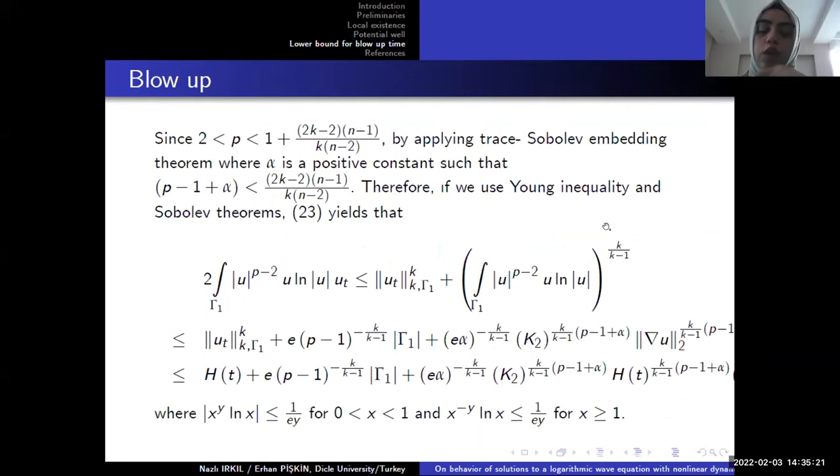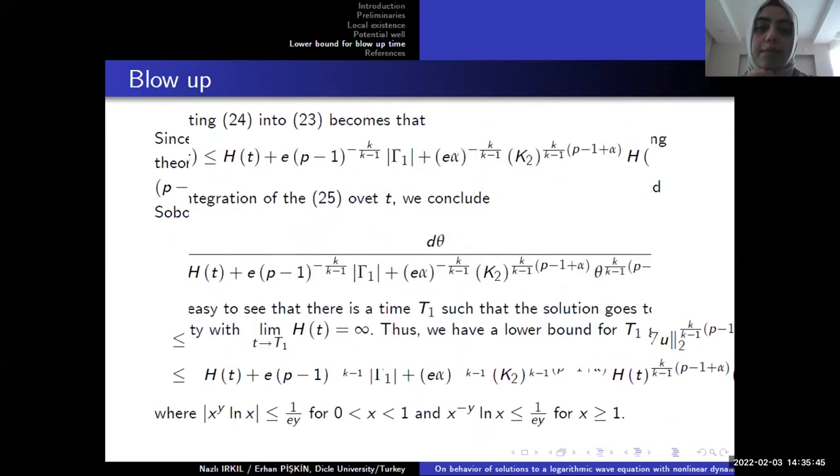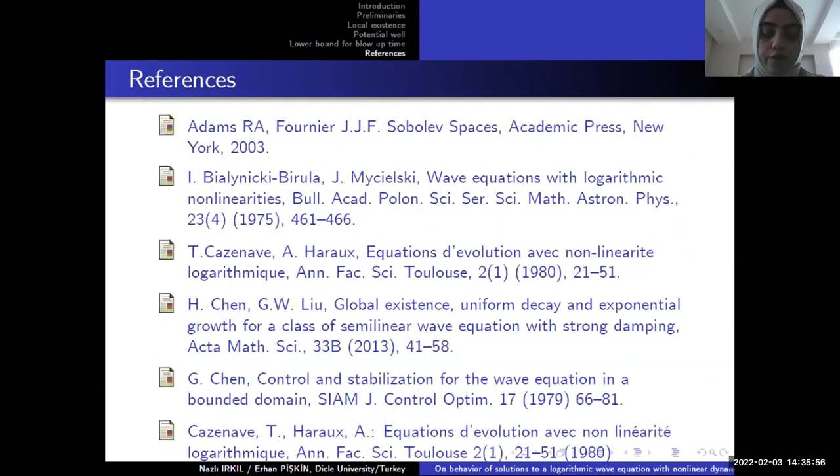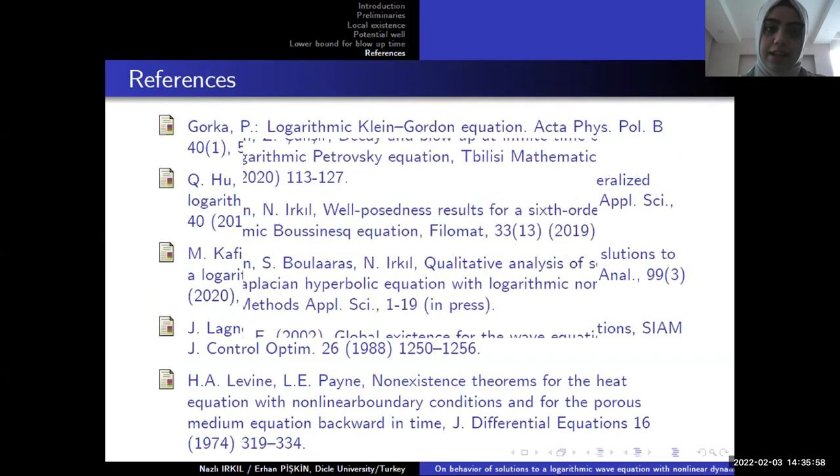Later, because of our conditions we can have trace-Sobolev embeddings and we can get this inequality. For this we use some logarithmic inequality to estimate the logarithmic source term. By inserting equation 24 into 23 we have this. This completes our proof. Our references are as follows. Thanks for your attention.